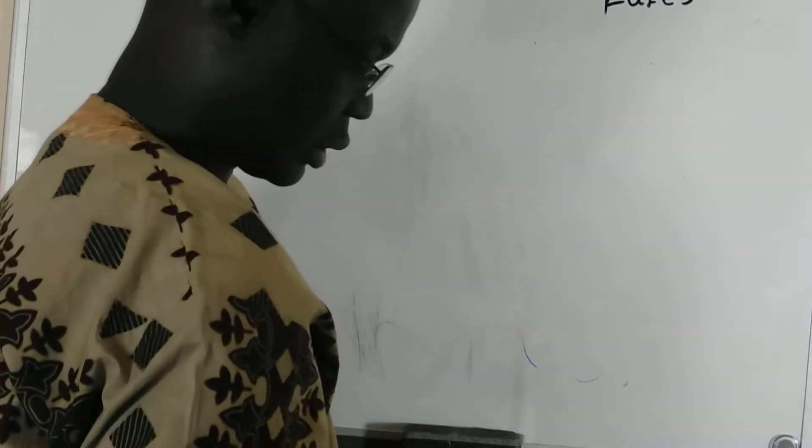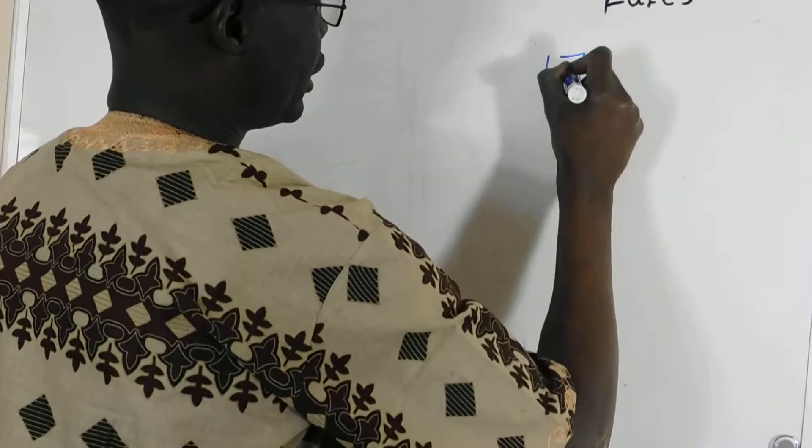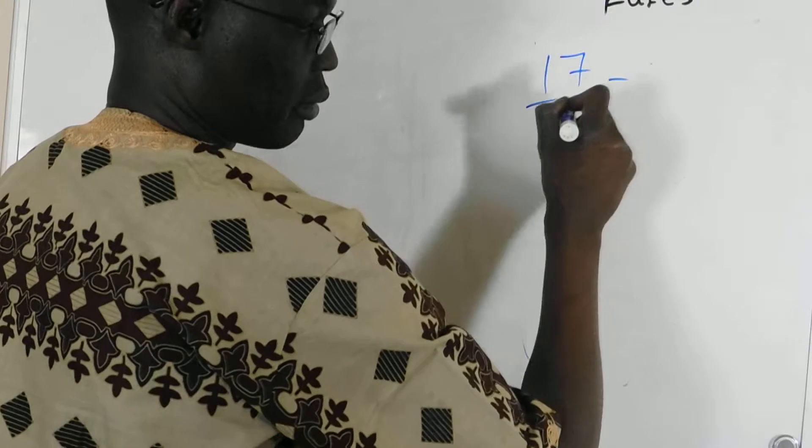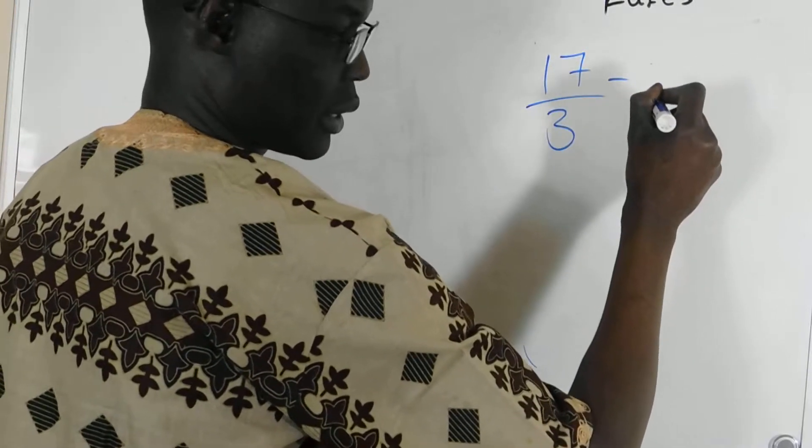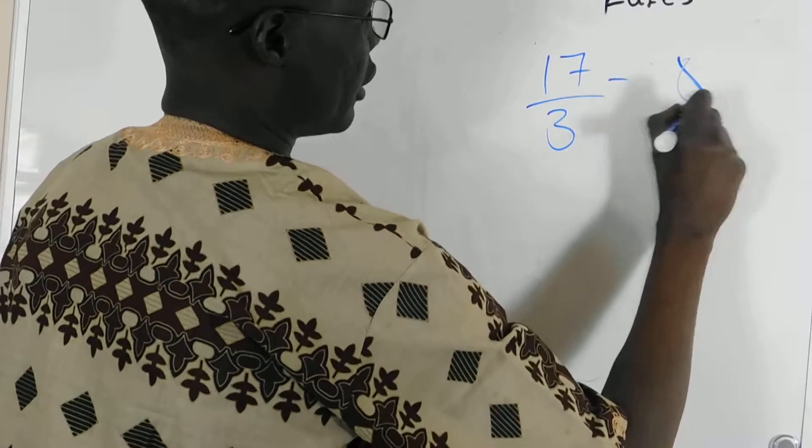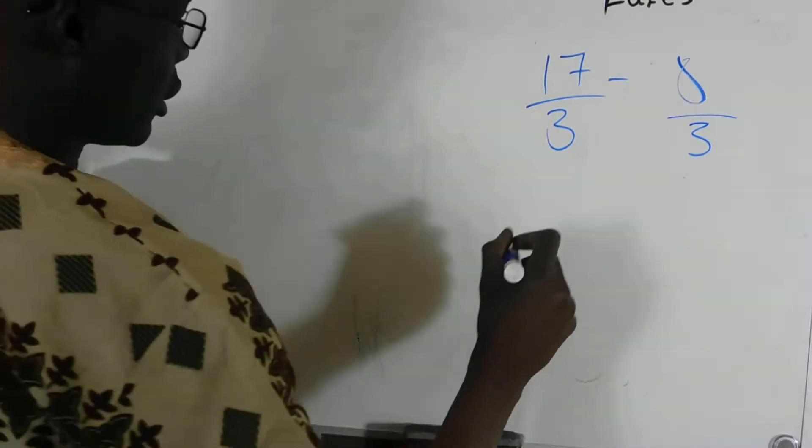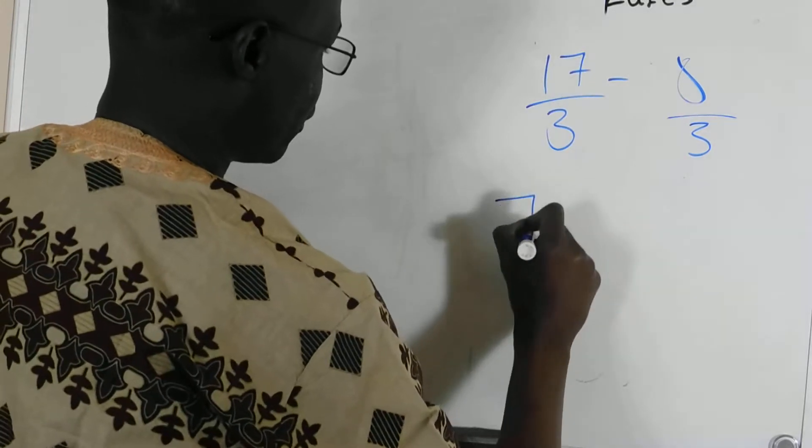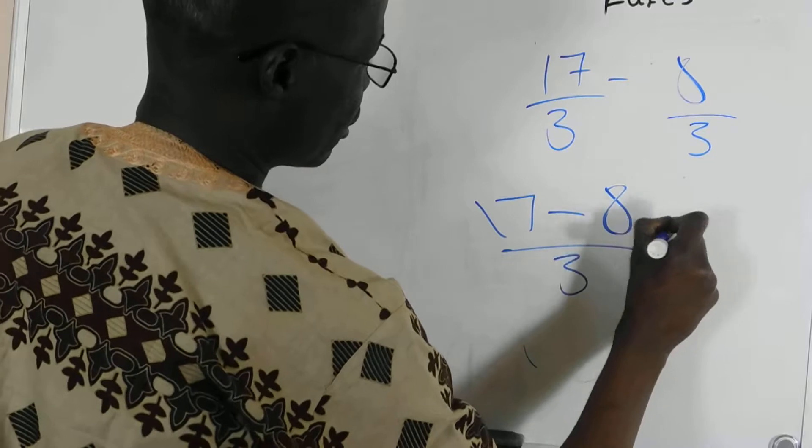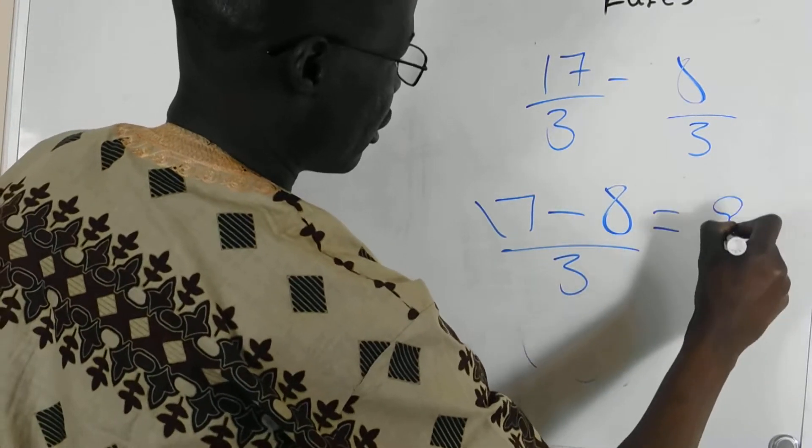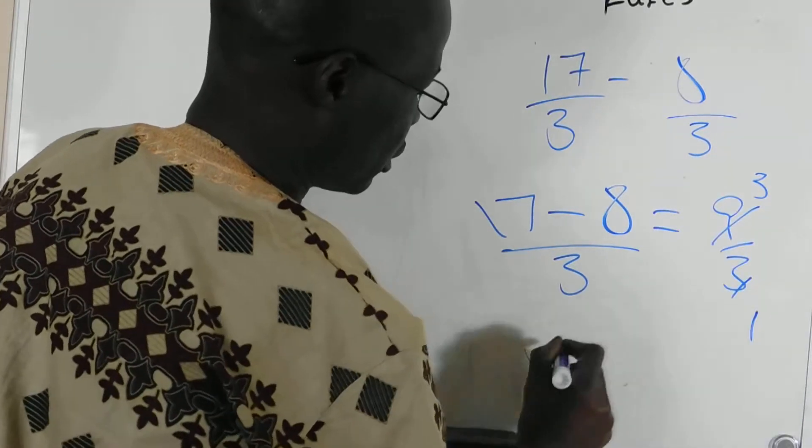Another one, it'd be 17 over 3, minus 8 over 3. And, so, it'd be 17 minus 8, all over 3. It should be equal 9 over 3, and then you divide it, it should be 3. So, and down, it should be 3.